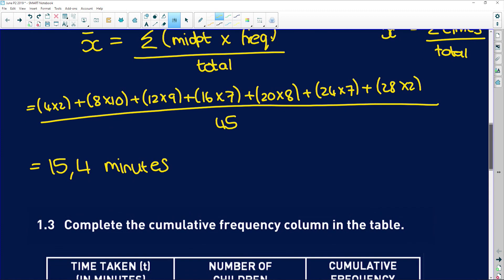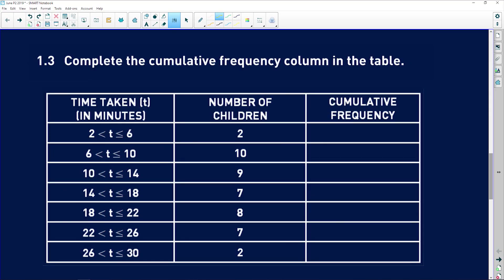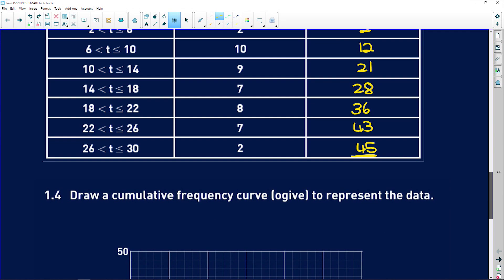Question 1.3 says complete the cumulative frequency column in the table. So cumulative should kind of ring a bell, maybe from finance - you know you get your accumulated amount is equal to your principal amount times whatever interest you're getting. Cumulative means that if I have like two apples and then I get another five apples, my cumulative is seven - you keep adding on to what you have. So here with the cumulative frequency, your starting number is two children, and then another 10 children took a different time interval, and then you keep adding the different numbers of children. So 12 plus 9 is 21 plus 7 is 28 plus 8 is 36 plus 7 is 43 plus 2 is 45. So that's your cumulative frequency, and it will always end in the total number of children that you have or the total number of whatever that you have.